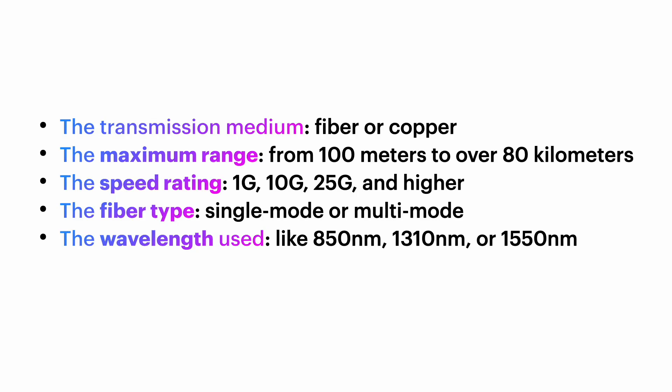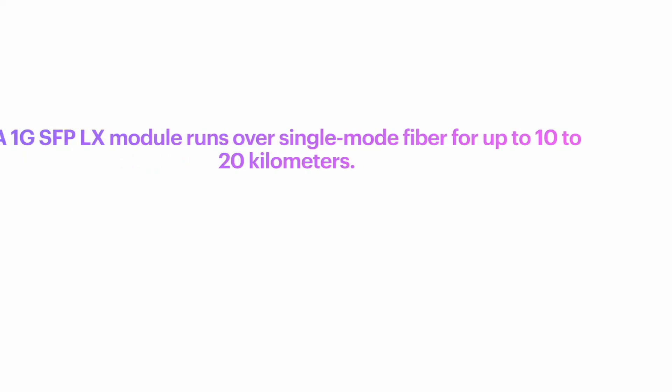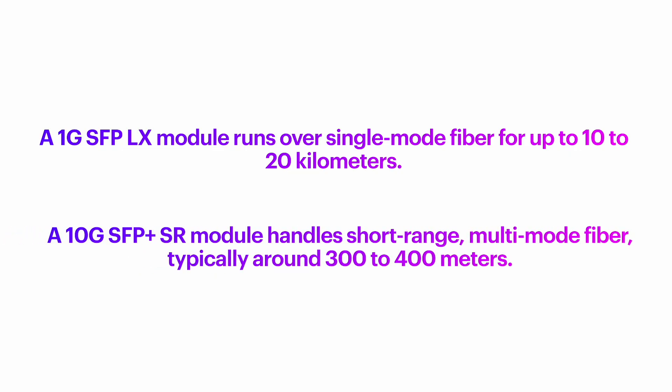SFP modules come in a wide range of formats depending on the transmission medium — fiber or copper — with maximum range from 100 meters to over 8 kilometers, speed ratings of 1 gigabit, 10 gigabit, 25 gigabit or even higher, and fiber type — single mode or multimode. For example, a 1-gigabit SFP LX module runs over single-mode fiber up to 10 to 20 kilometers. A 10-gigabit SFP+ SR module handles short-range multimode fiber, typically around 300 to 400 meters. Depending on the SFP type, you can support speeds from 1 to 25 gigabits per second per port.